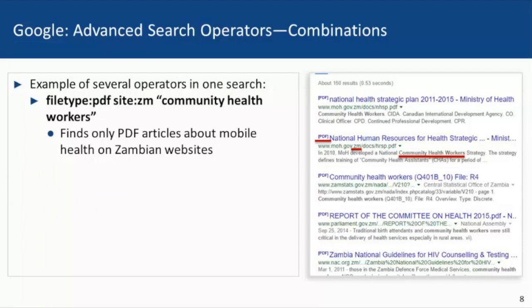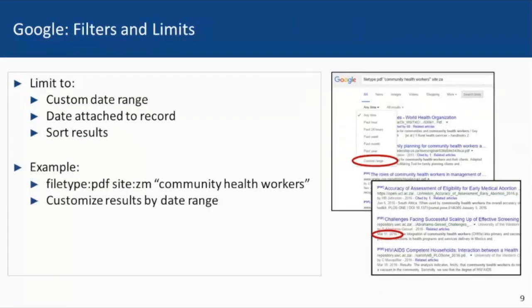You can also use several operators in one search. In this example to the right, I searched for PDFs about community health workers on websites in Zambia using: filetype:PDF site:ZM "community health workers." For even further refinement, use Google's filters. Using the previous example of community health workers in Zambia, add a date range to further refine your results by clicking on search tools in the menu directly under the search box and then selecting your date.